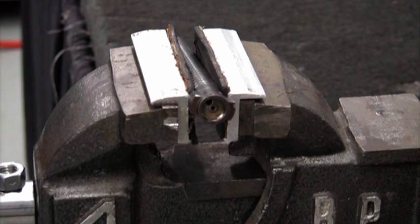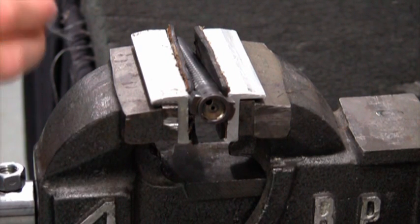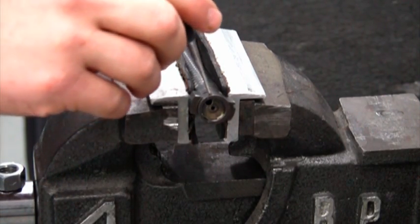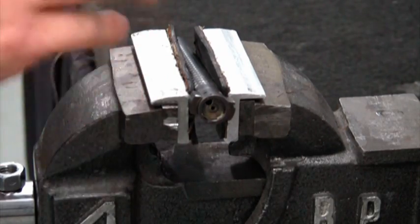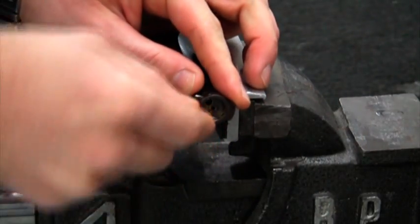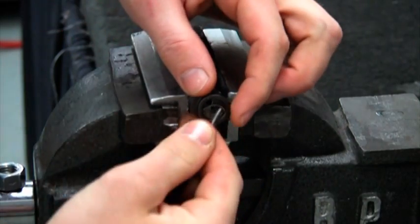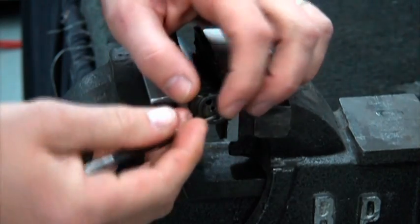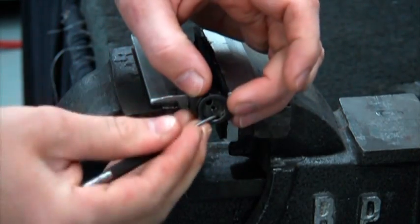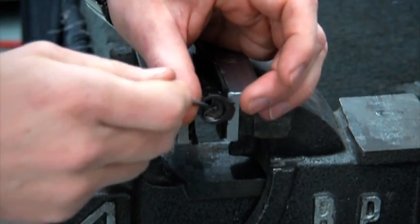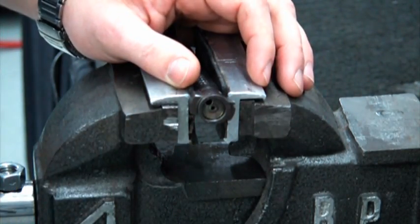The next thing we need to remove is the original factory Remington extractor. There's usually either a small weld or a divot on top, and you just punch that out. With a little bit of effort, it'll pop right out.